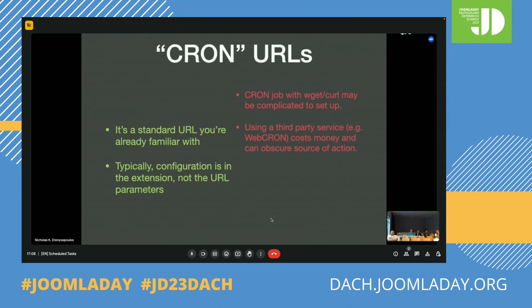We had our fair share of confused users over the years who did exactly that. Cron URLs are also slower because you need to load the entire web server and most of Joomla. Since it's running in a web server, it's affected by various timeouts — from PHP itself, the web server, and even timeouts set by the host for each process. Finally, they can have an adverse interaction with third-party extensions — some plugins may assume the site is trying to display an HTML page and act accordingly, leaving everything broken.